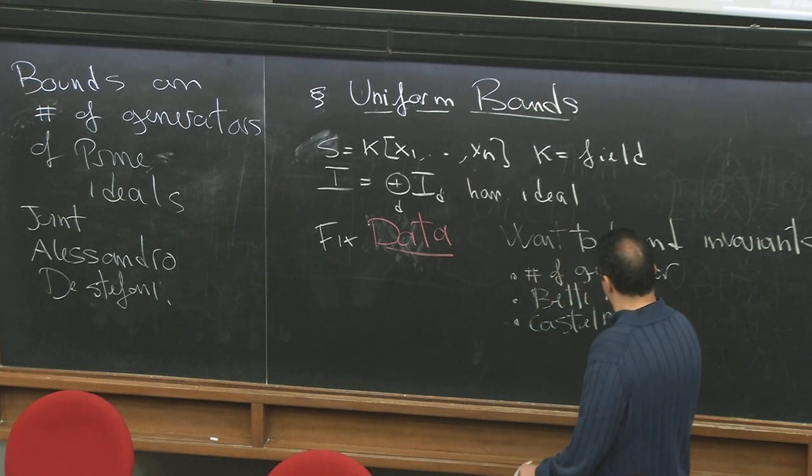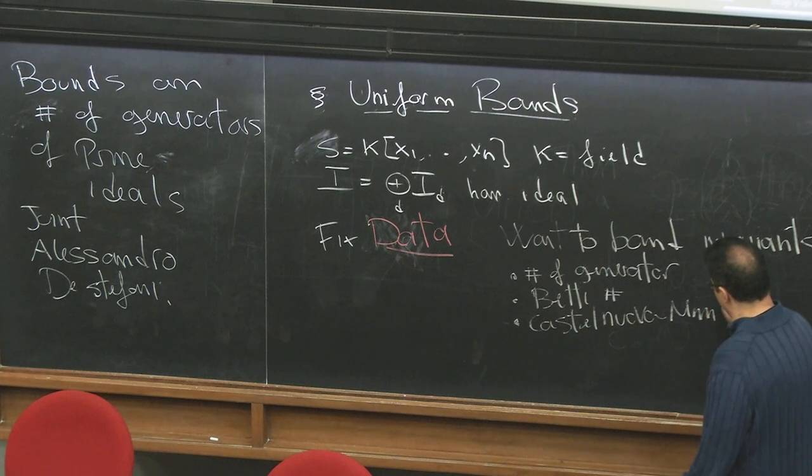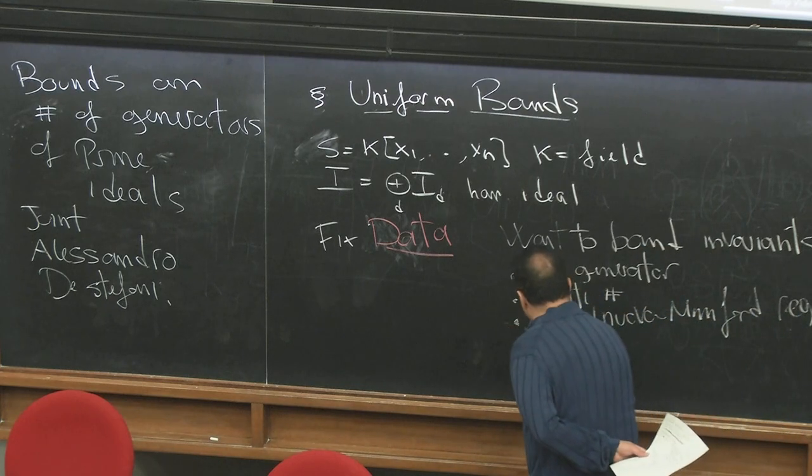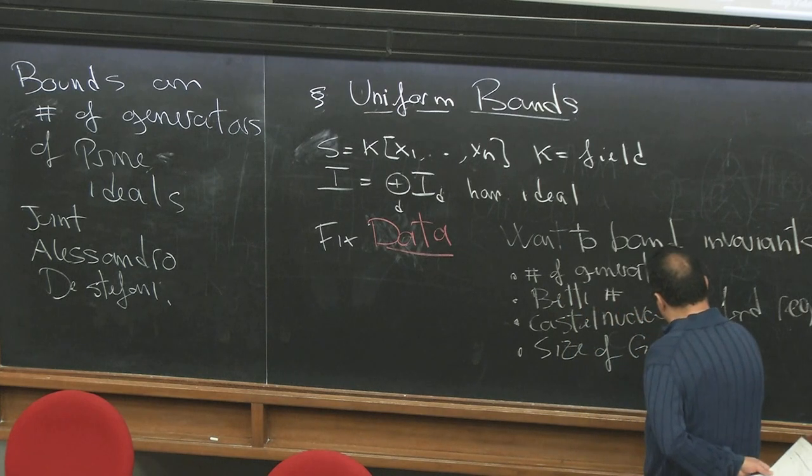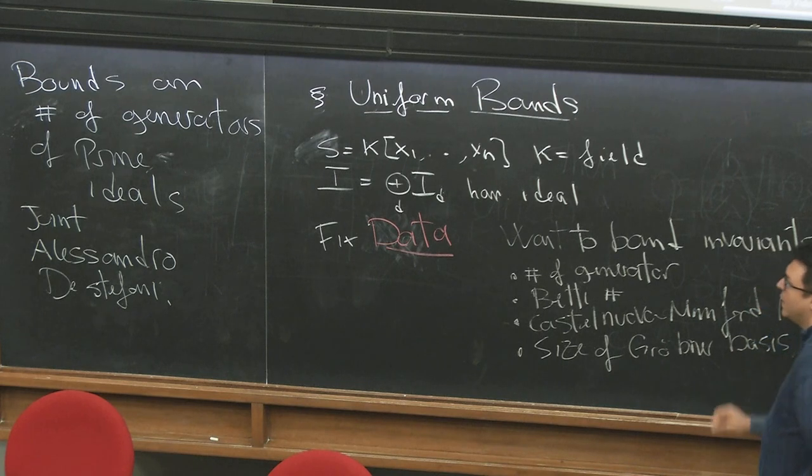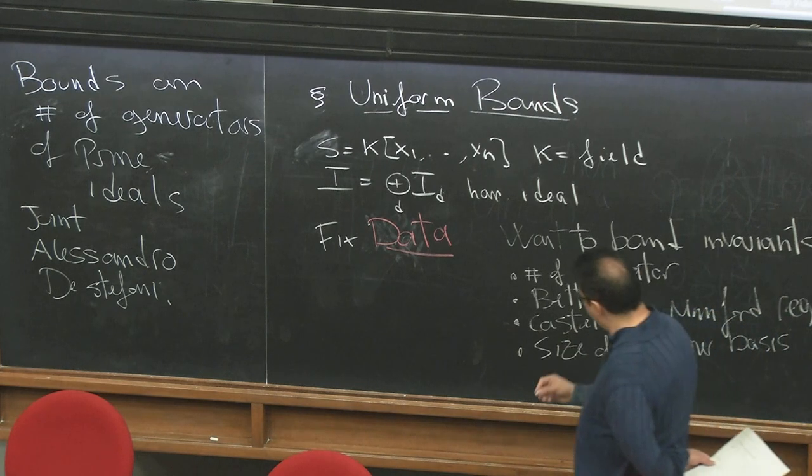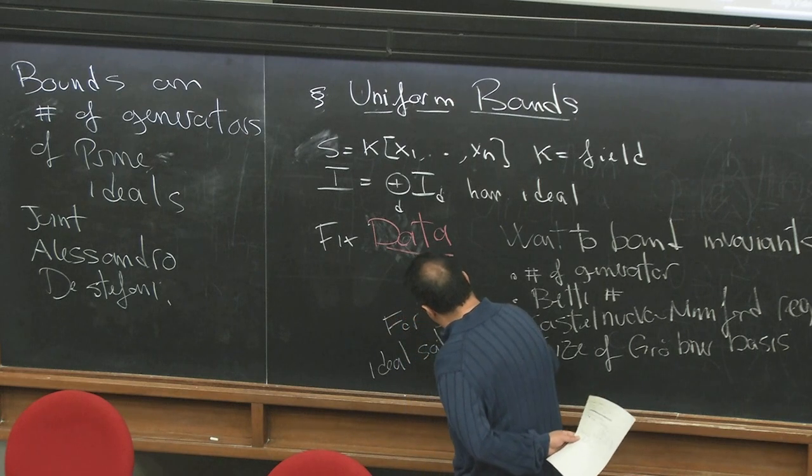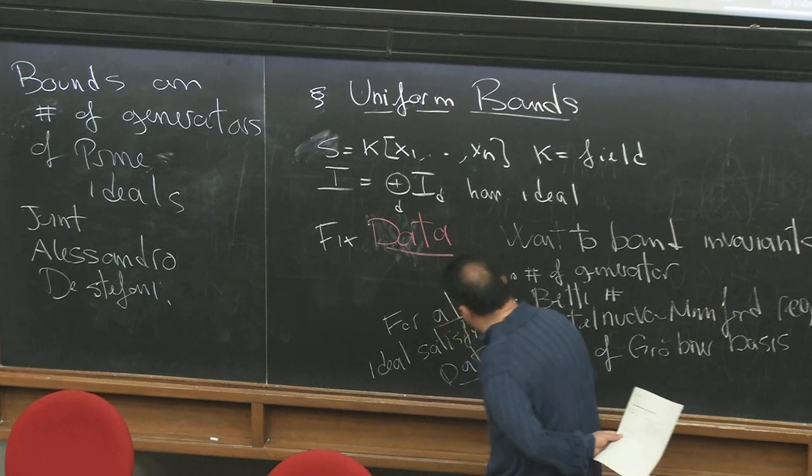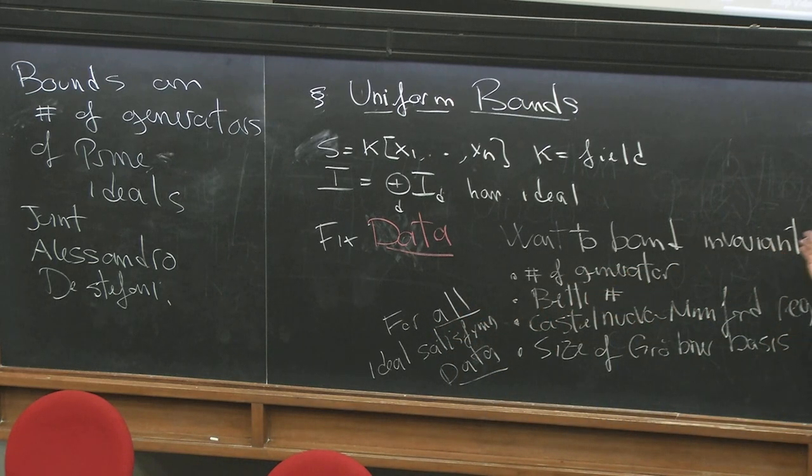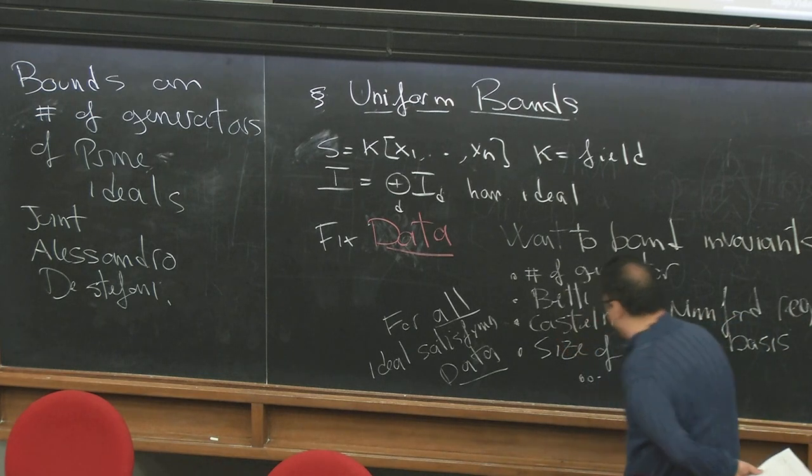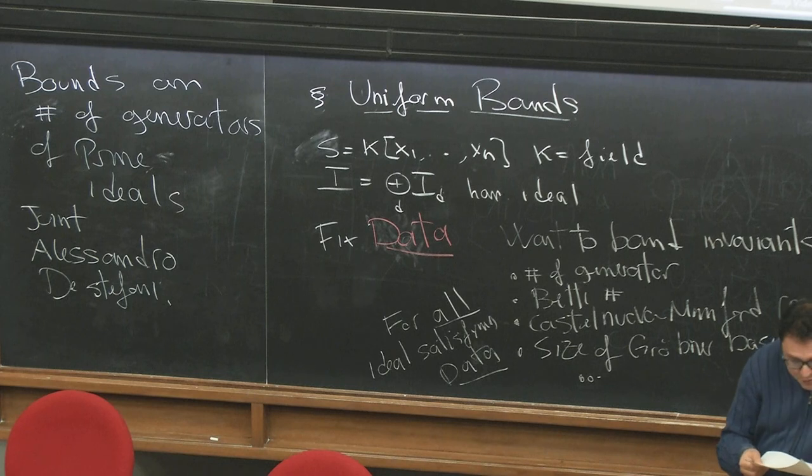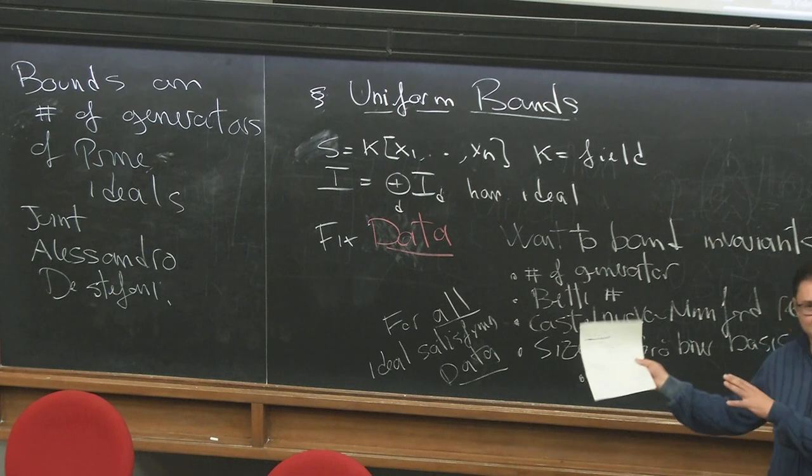Castelnuovo-Mumford regularity, and since I'm taking a computational point of view, size of Gröbner basis. I want to do this for all ideals satisfying the data. This is a possible list, of course not a small list. I want to mention a quote from yesterday from David Eisenbud from his talk that he said the field revolves around the size of Betti numbers. So my focus is going to be on controlling the size of Betti numbers.